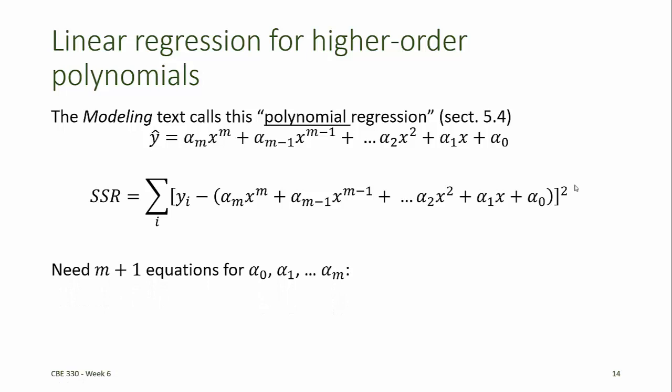To solve for the m plus 1 coefficients, we'll need m plus 1 equations. These equations will all be derived by taking the partial derivatives of the sum of the squared residuals with respect to each of the coefficients and setting that partial derivative equal to 0.